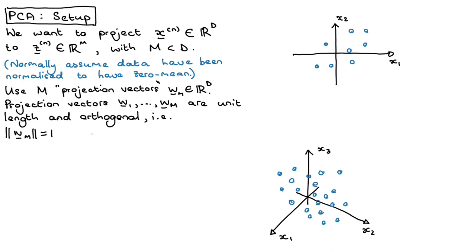If you take the dot product between any two of the vectors — W_i transpose times W_j — that will equal zero for all i not equal to j. This basically just means that all of the vectors, if you think about it in two or three dimensions, are 90 degrees with respect to one another. Some textbooks refer to this as the loading vector or the principal component loading vector.